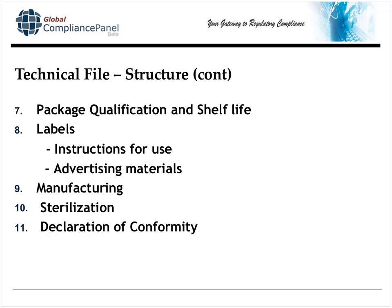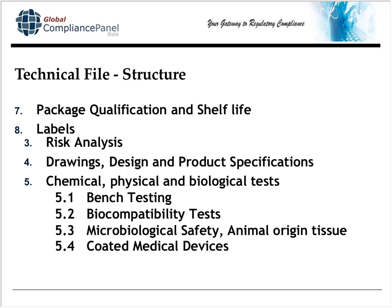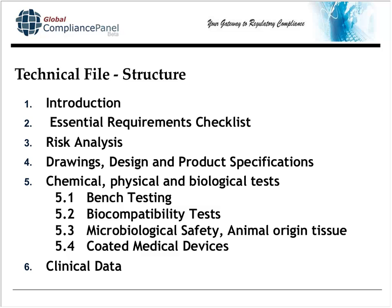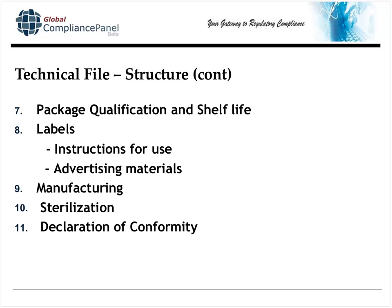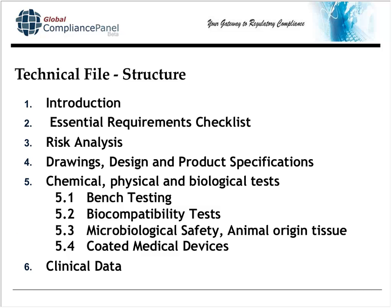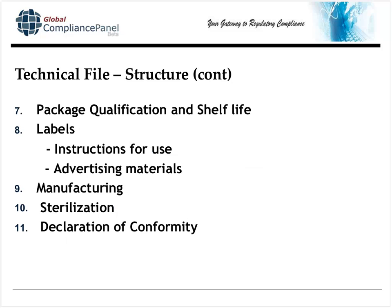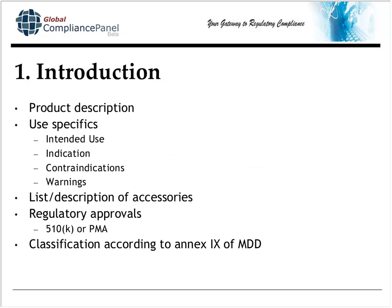There are quite a few sections. If you have no clinical data in your technical file, don't just leave that item empty — put a section in there for clinical data and explain why it is not required. Section 7 is package qualification and shelf life. Section 8 is labels, all of your instructions for use, but also your advertising materials are part of your technical file. Section 9 is manufacturing and sterilization, and the declaration of conformity is the last section.